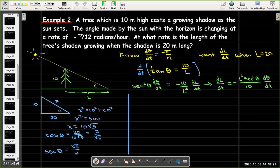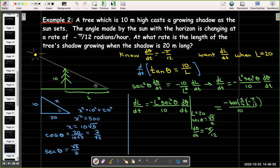And then secant of theta is the reciprocal of cosine of theta. So, secant of theta is radical 5 over 2. And, in fact, I won't even need to worry about the radical because I'm going to use secant squared theta in my evaluation. So, let's go ahead and evaluate that expression for L equals 20, secant theta equals radical 5 over 2, and dθ/dt is negative π over 12. And, doing some simplifying, I come up with 25π over 6 meters per hour.